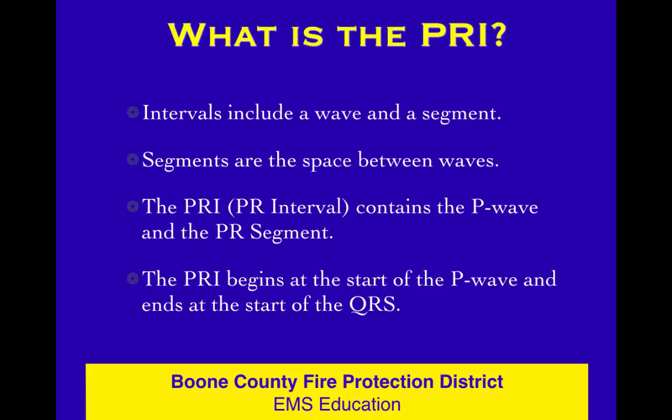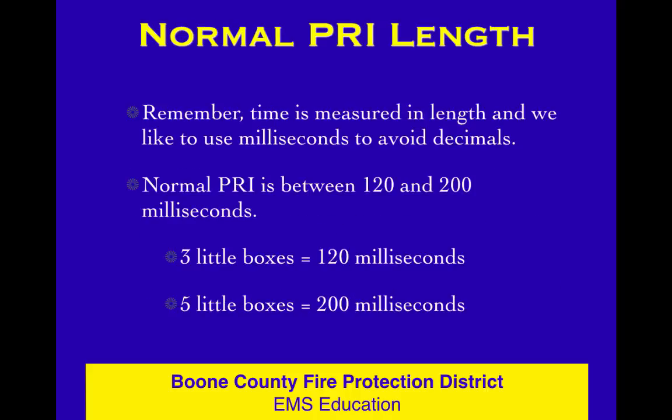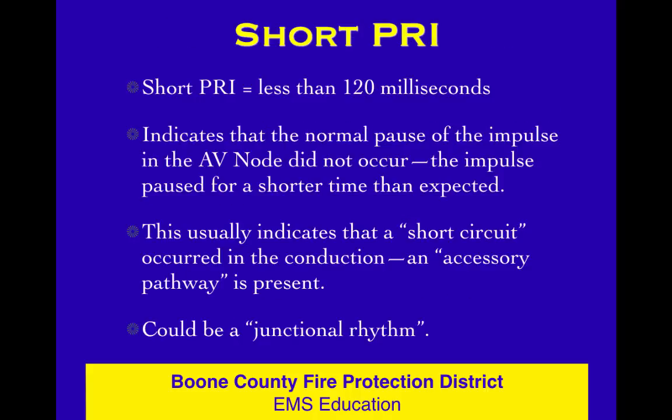The PRI is a wave and a segment. Segments are the space between waves. The PRI contains the PR segment and the P wave, starting at the start of the P and ending at the start of the QRS. What is the normal length? It's between 120 and 200 milliseconds. If it's less than 120, it's too short; if it's more than 200, it's too long. Each little box on the ECG is worth 40 milliseconds, so 120 milliseconds would be three little boxes and 200 would be five little boxes.